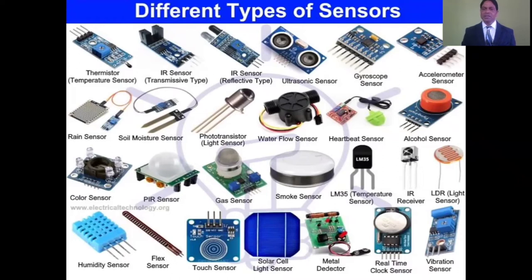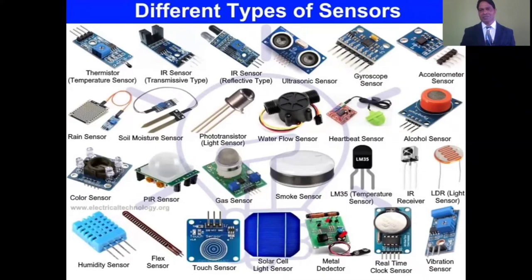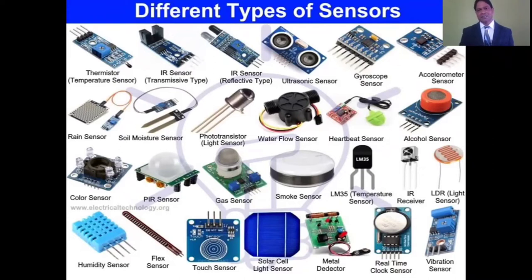Heartbeat sensor senses the heartbeat of a human being. Alcohol sensor — it can be used by traffic police where they check whether drivers are drunk or not. Color sensors sense different types of colors. And gas sensors are capable to detect gas in some environment.